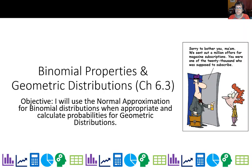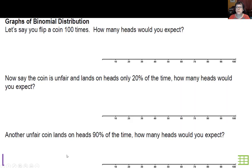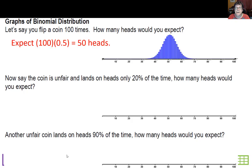We'll be looking at expected values for binomial distributions and introducing one more distribution, geometric, which is not as complicated as the binomial. Let's go back to the binomial distribution. If you flip a coin 100 times, how many heads would you expect? If it's a fair coin, you would expect 50 heads.